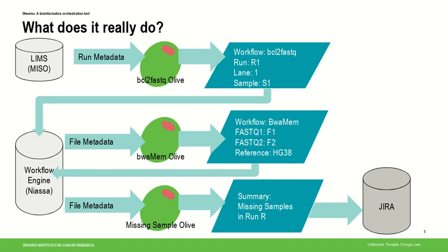The BCL-to-FASTQ workflow adds metadata to the file indicating whether any reads were generated. So we have another Olive that ingests that file metadata, and if it finds files with no reads in them, it files a ticket to our lab saying: you told us something was on the sequencer, but when we ran it, there wasn't anything — how do you want to deal with that? And that's not a workflow; it's a ticket in Jira.